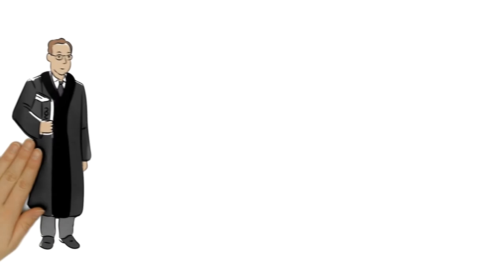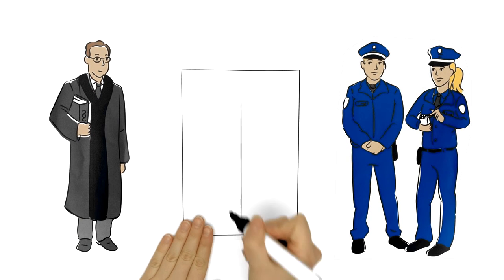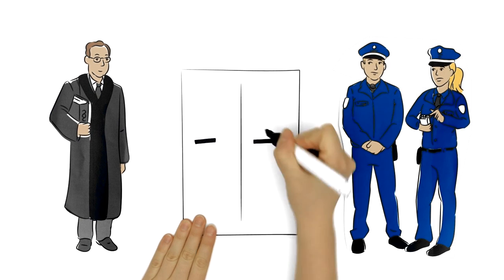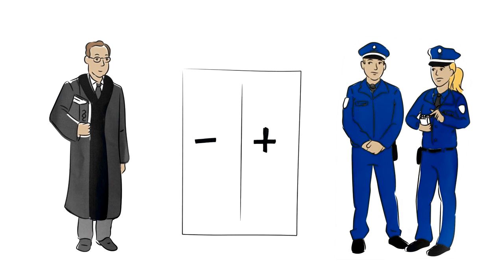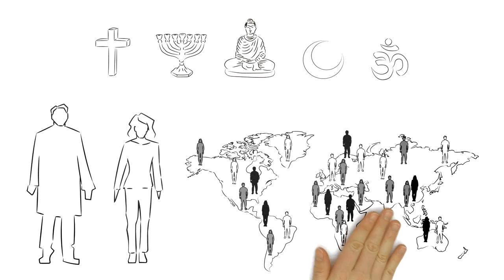The prosecutor and the police have to investigate all circumstances, be it to the disadvantage or the advantage of the accused. Sex, nationality and religious affiliation are of no consequence.